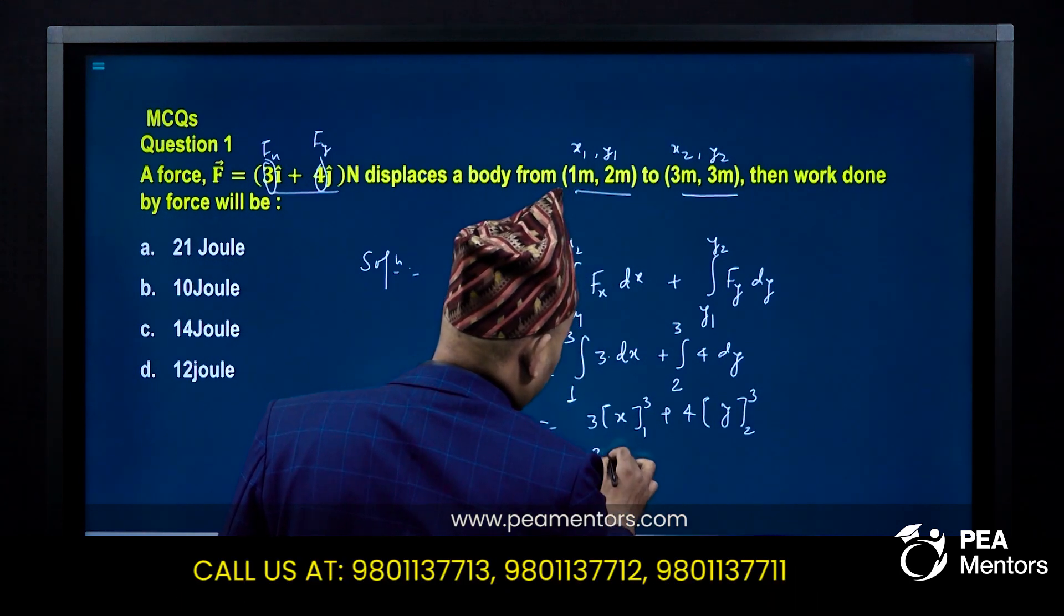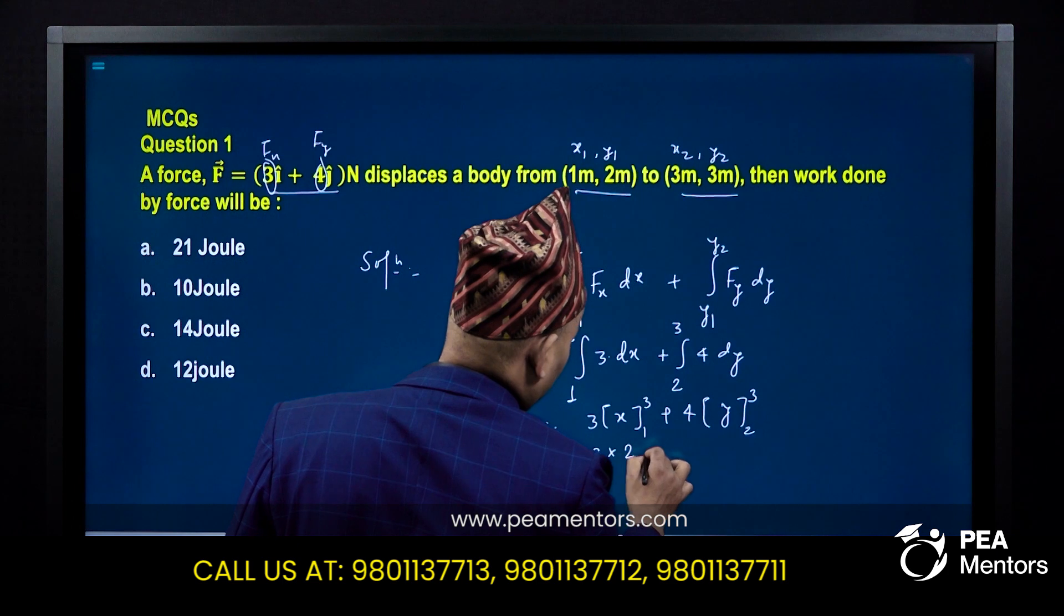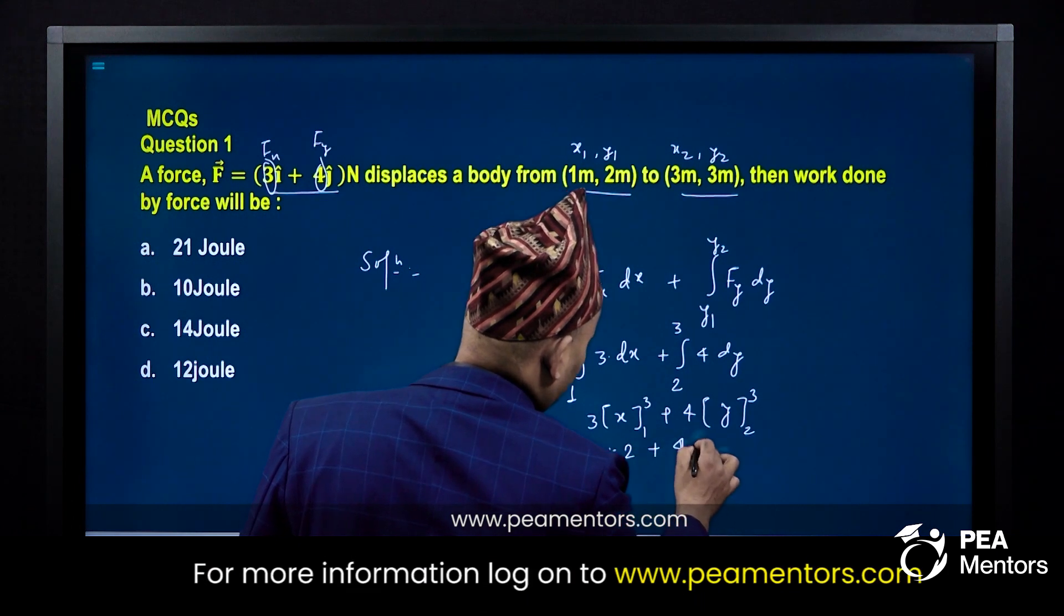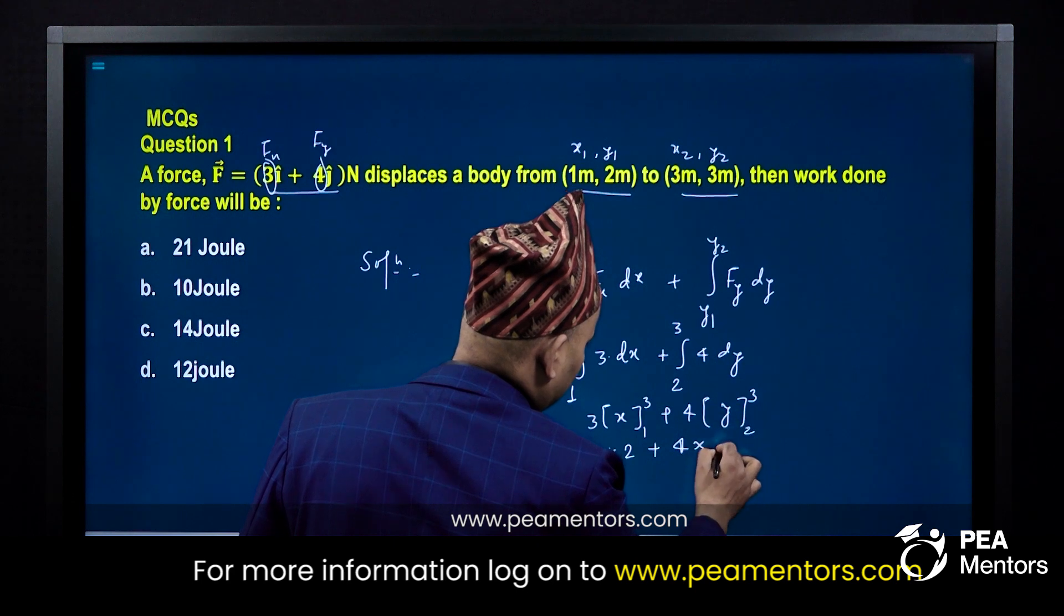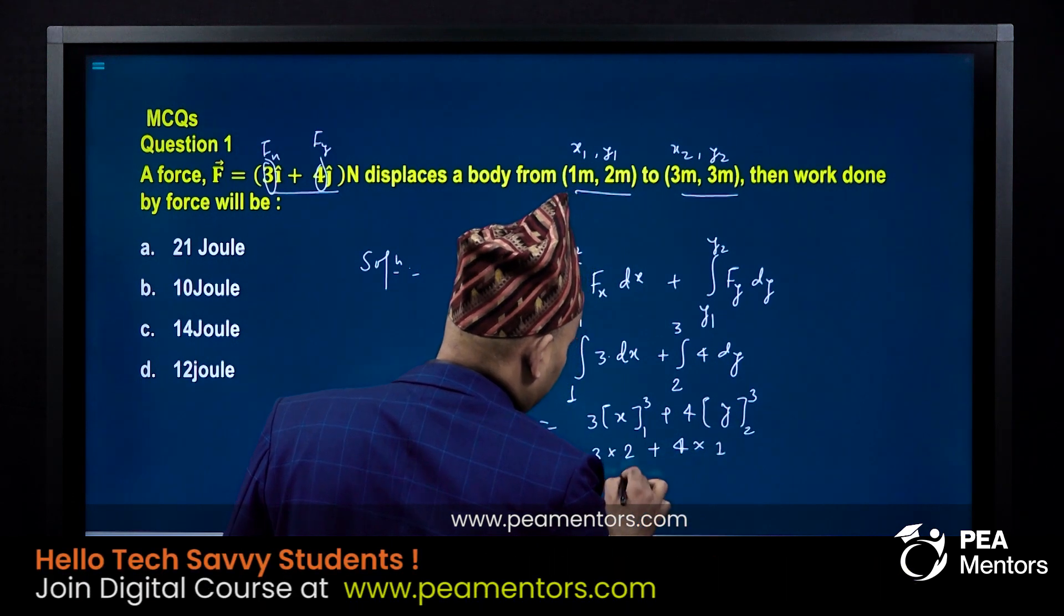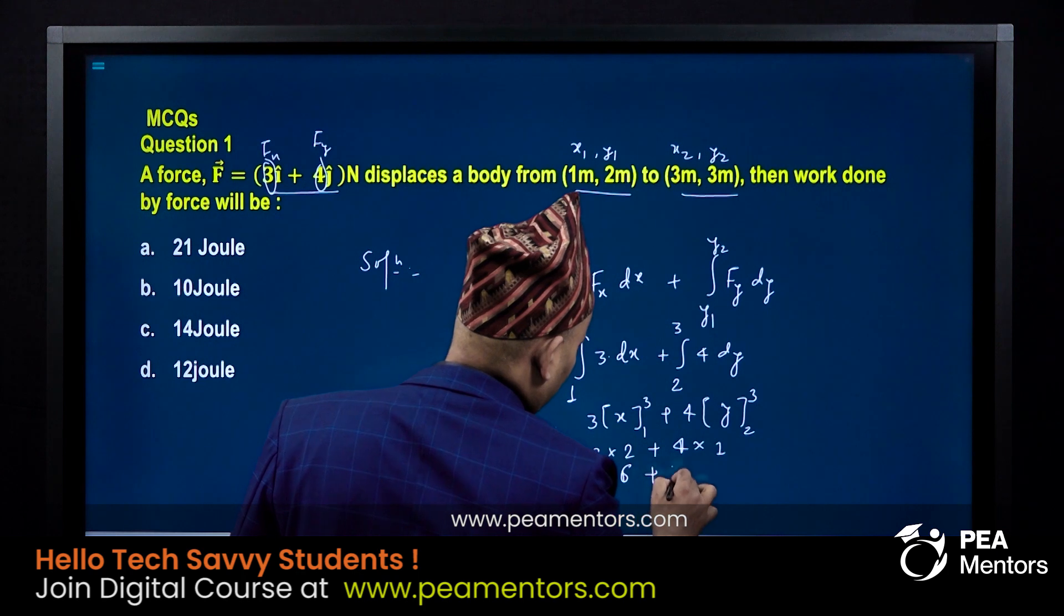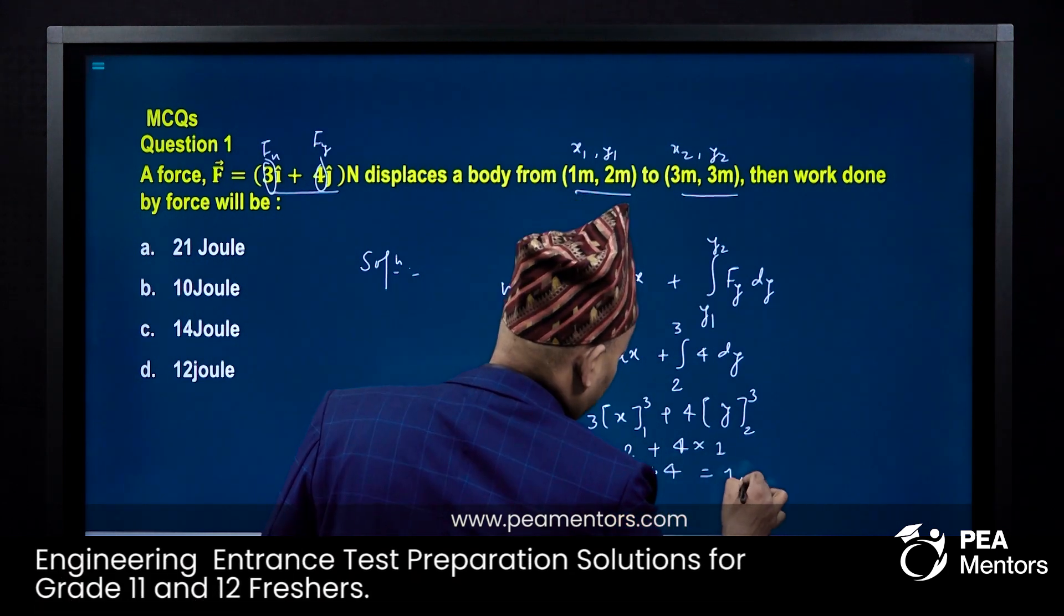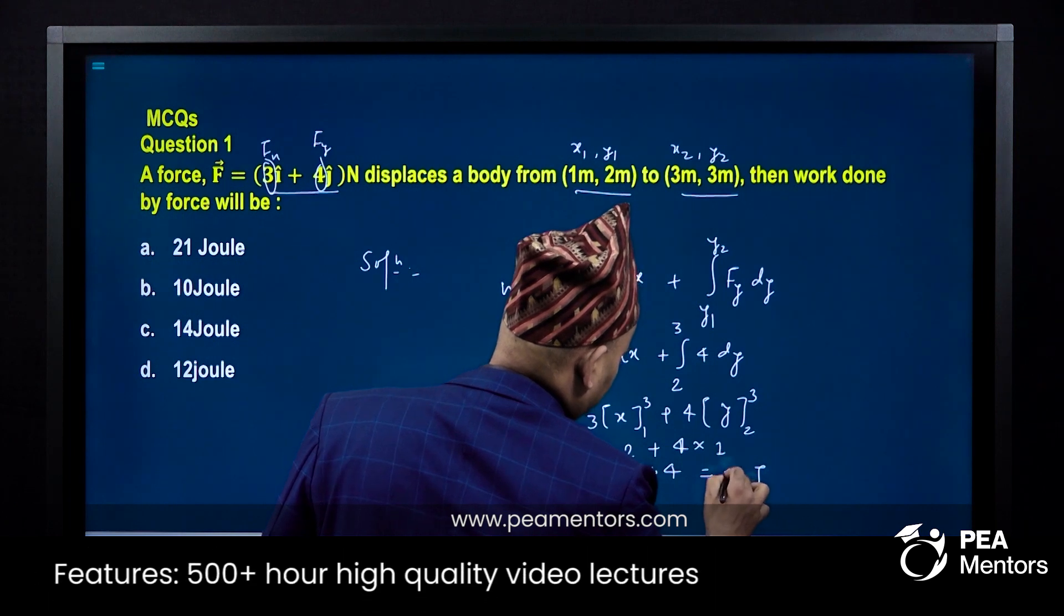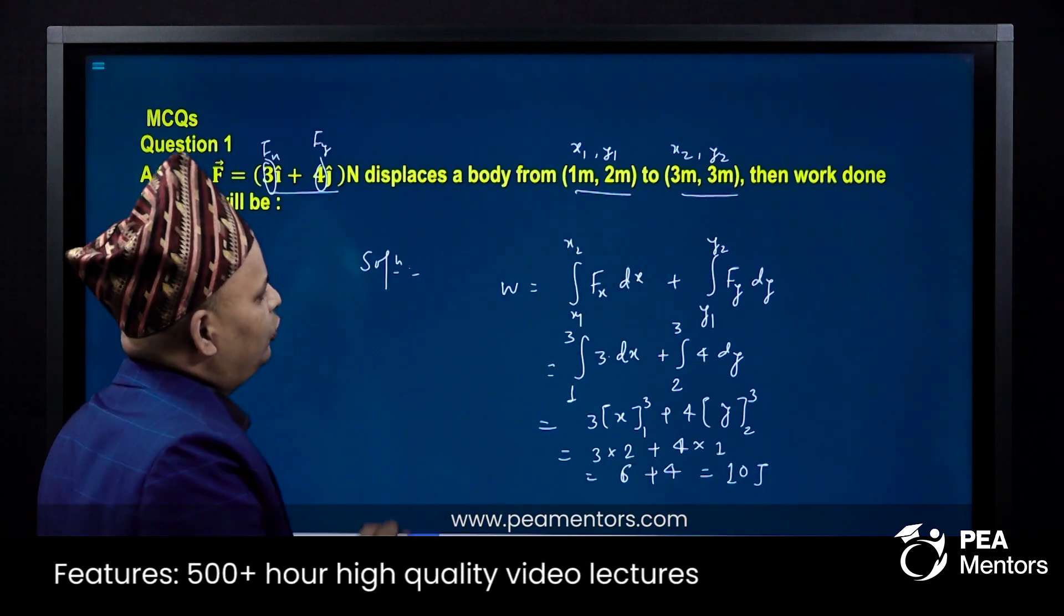So 3 into 3 minus 1 gives us 2, that becomes 6, plus 4 into (3 minus 2), upper limit minus lower limit. 3 minus 2 is 1, so this value is 6 plus 4. The answer is 10 Joule.